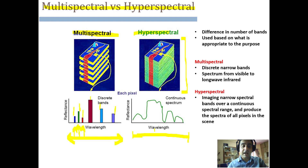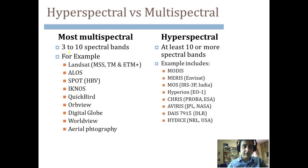The amount of information captured in hyperspectral remote sensing is very large, whereas in multispectral there are limitations as information is available in narrow, discrete bands. Multispectral sensors have three to ten bands, and examples include Landsat MSS, Landsat TM, Landsat ETM, ALOS PALSAR, SPOT, IKONOS, QuickBird, OrbView, DigitalGlobe WorldView, and aerial photography.